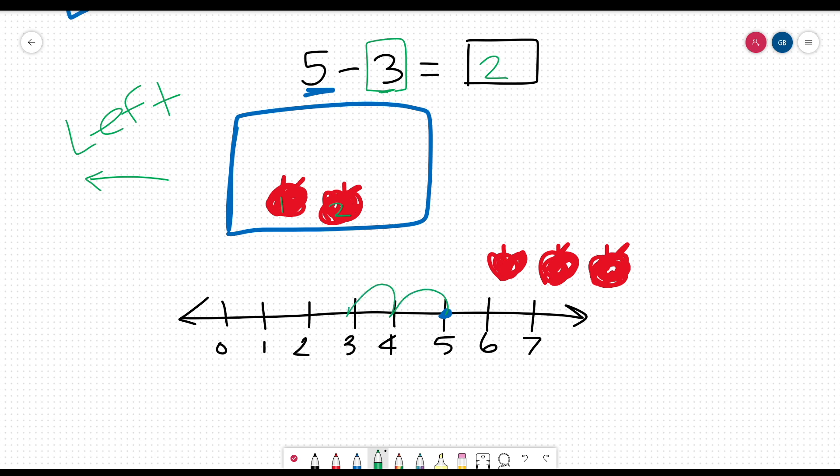1, 2, 3. We landed at a 2, so our answer is 2. We got the same answer by using the apples and by using the number line.